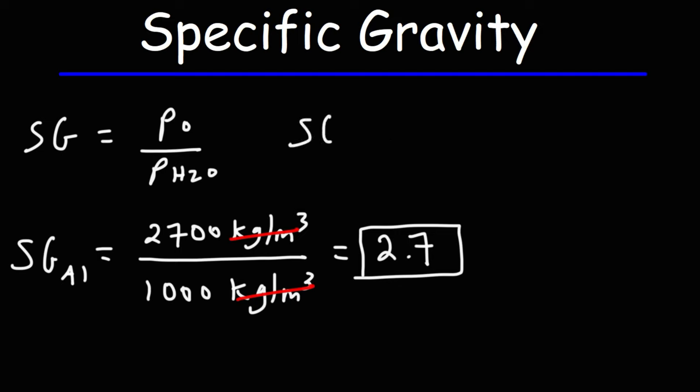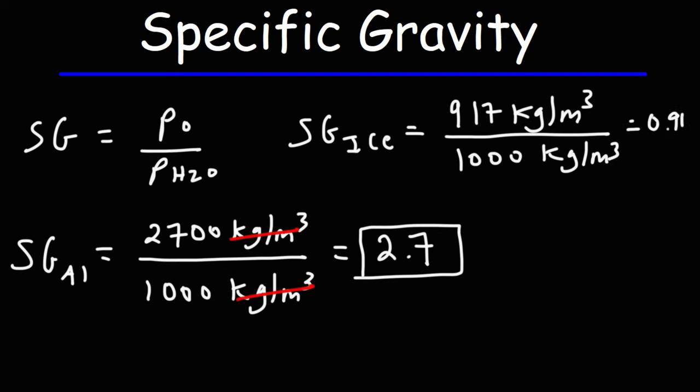Let's say for instance we want to calculate the specific gravity of ice. All we need to know is the density of ice and the density of water. The density of ice is 917 kilograms per cubic meter. The density of water is a thousand. So when you divide these two, you get 0.917.